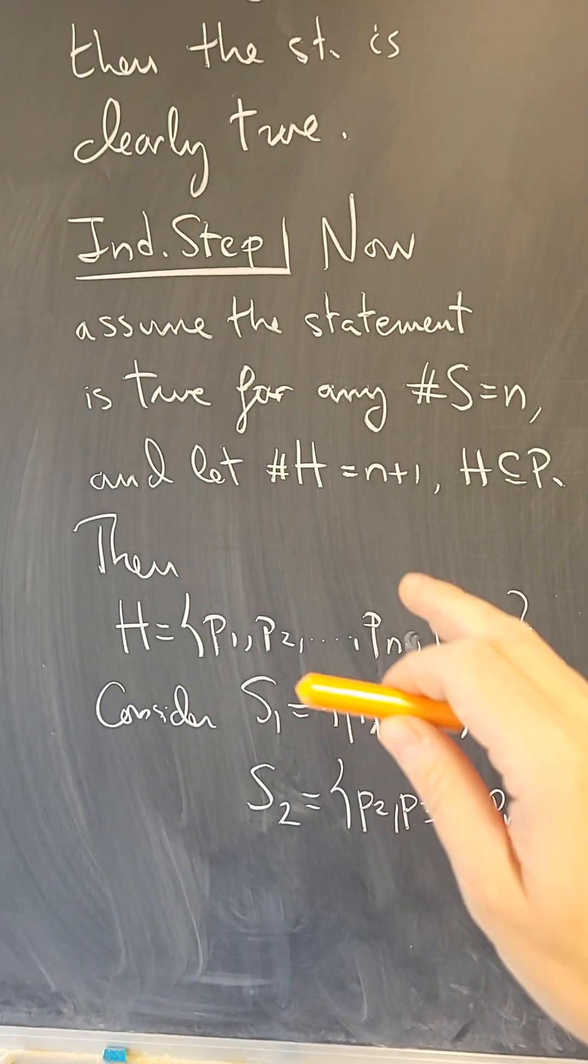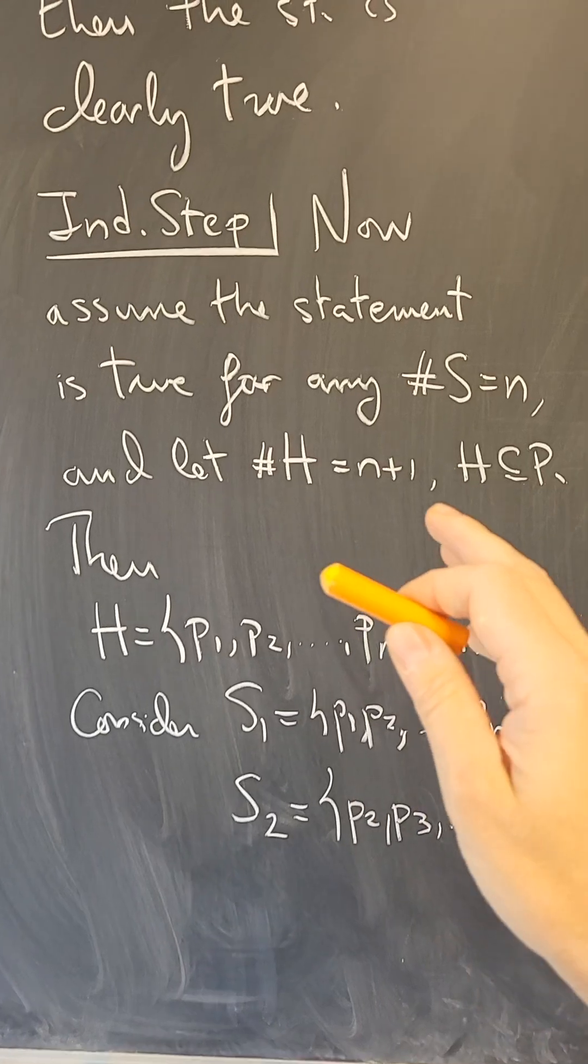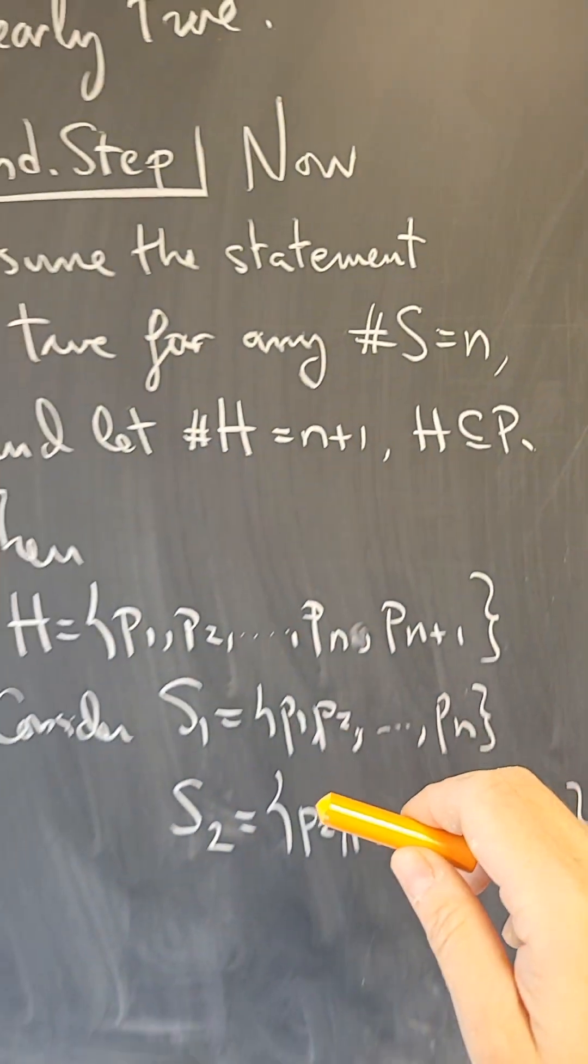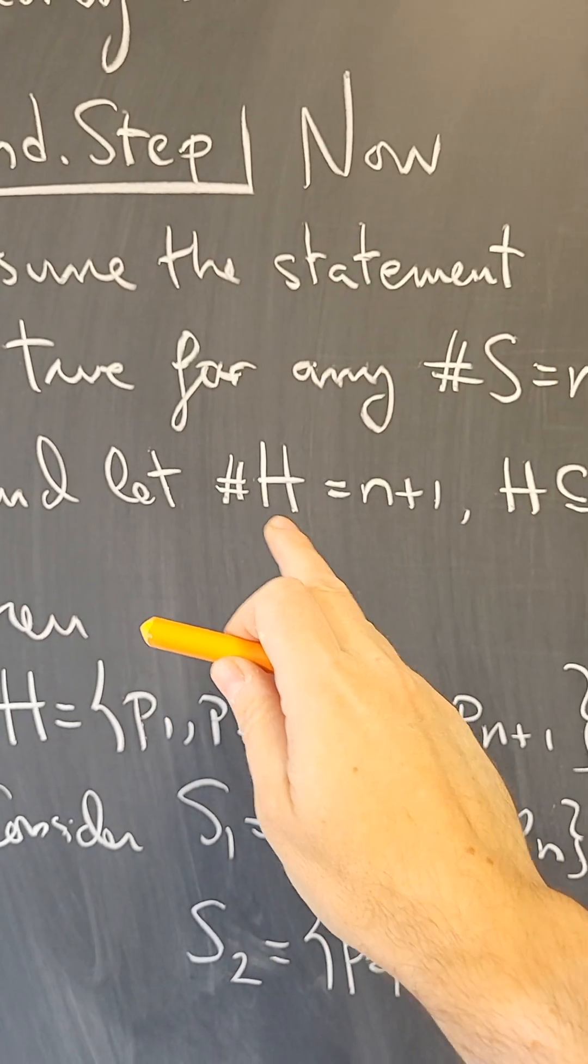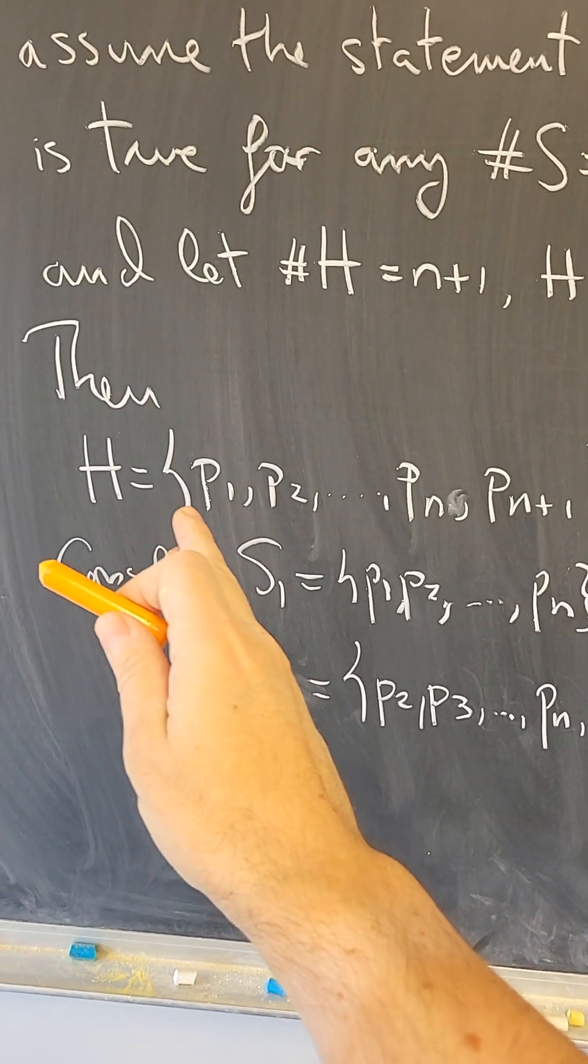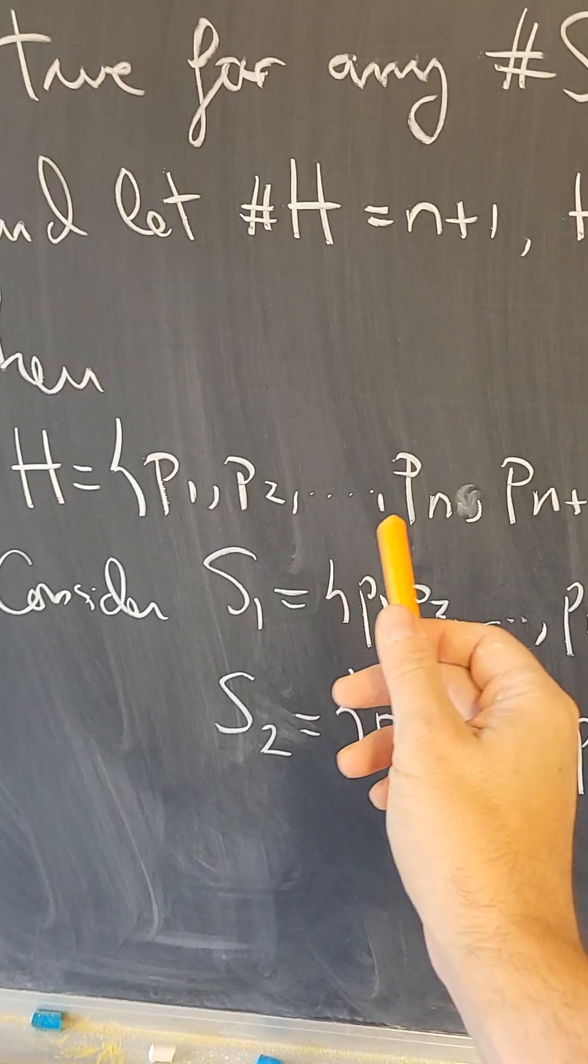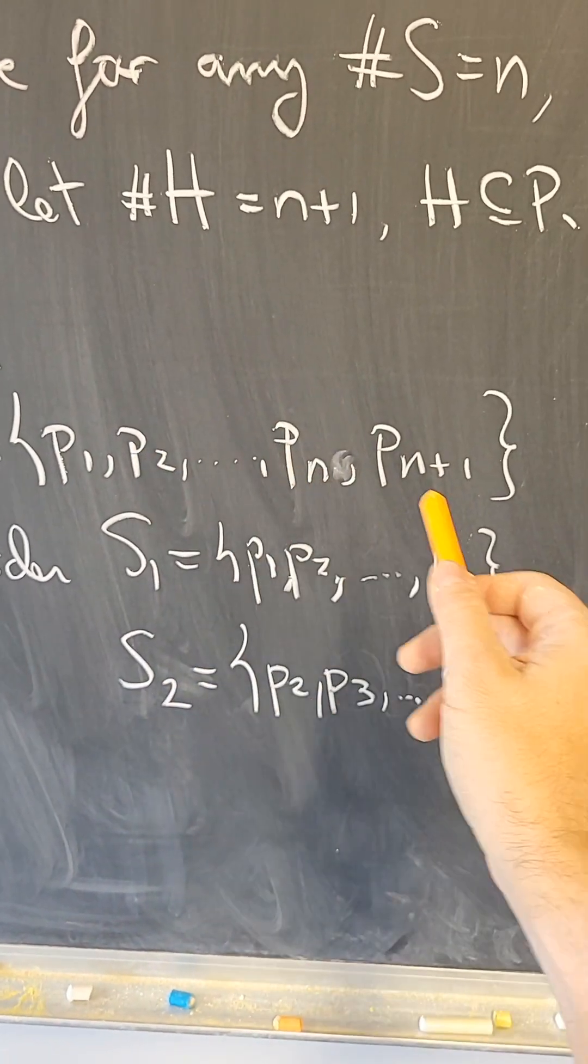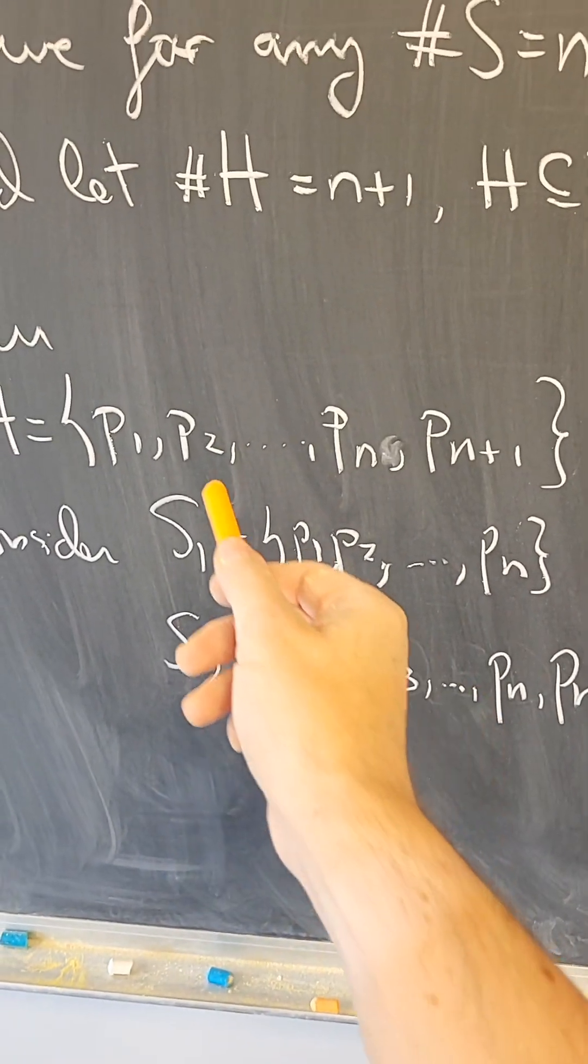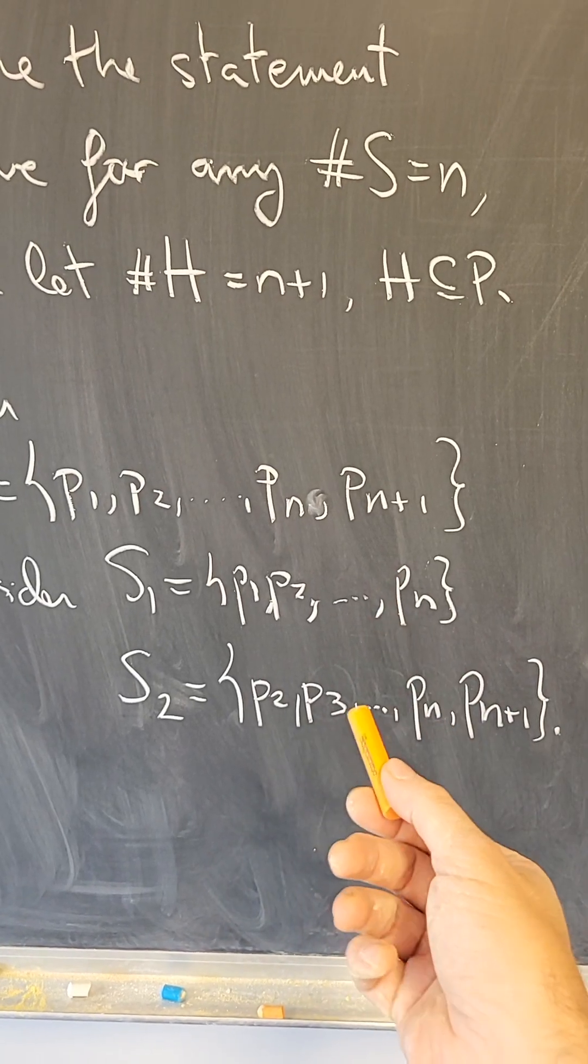How about the induction step? So now we want to prove that the Nth case implies the N plus 1th case. So we're going to assume this statement is true for any subset with N elements. And now consider a subset H, a subset of P, with N plus 1 elements. Then H will have N plus 1 people in it. And what we're going to consider is the first N and the last N. So S1 is P1 through PN. And S2 is P2 through PN plus 1. Then both sets have N elements.